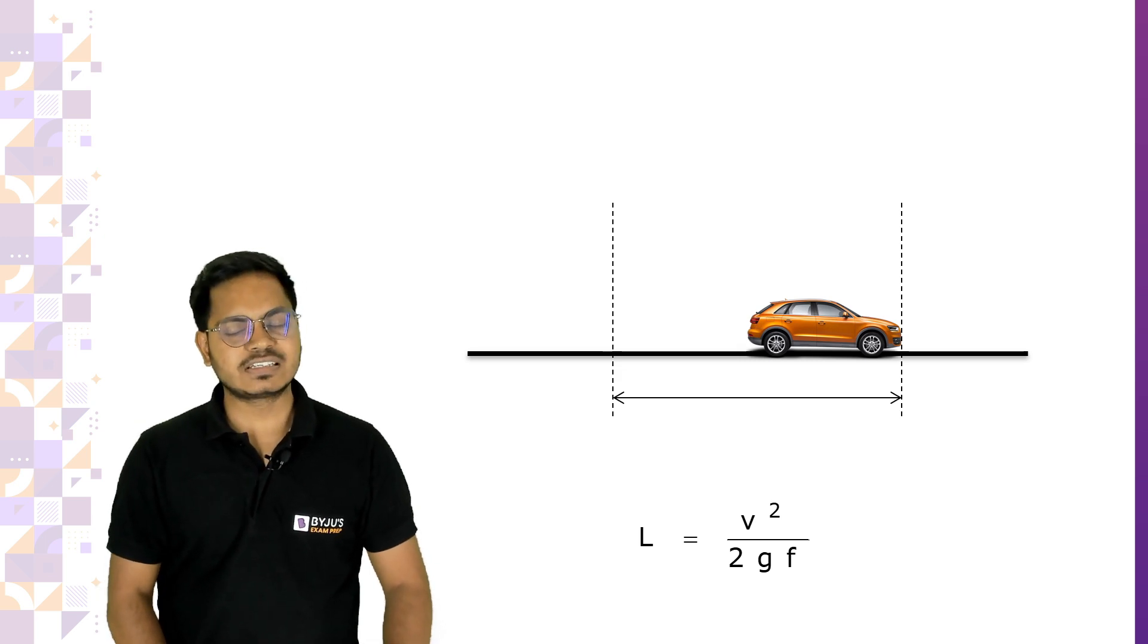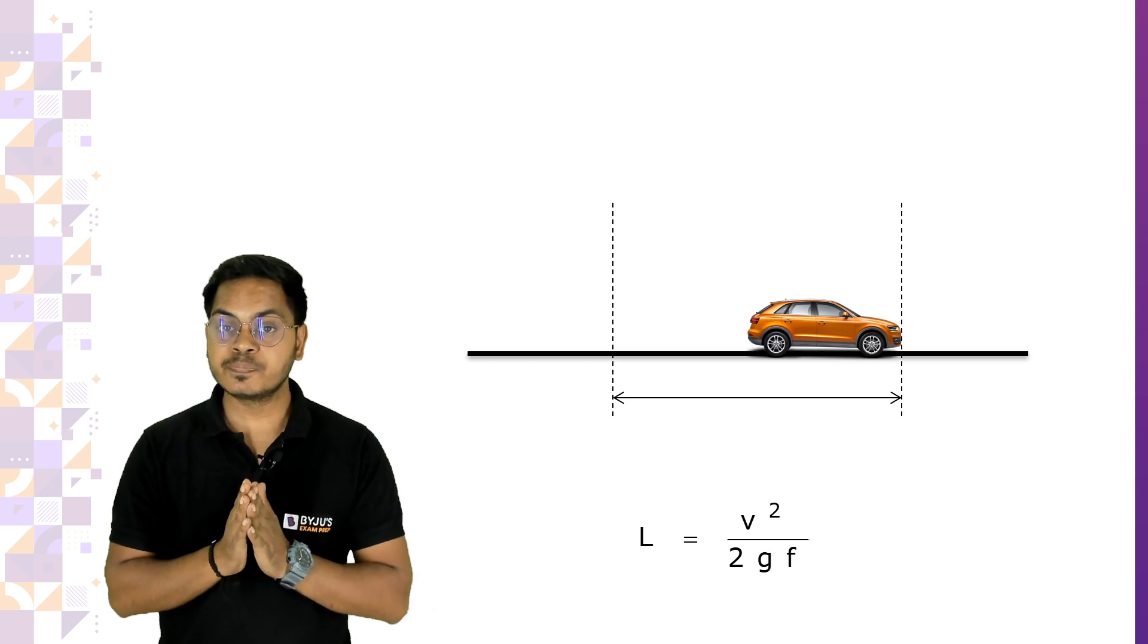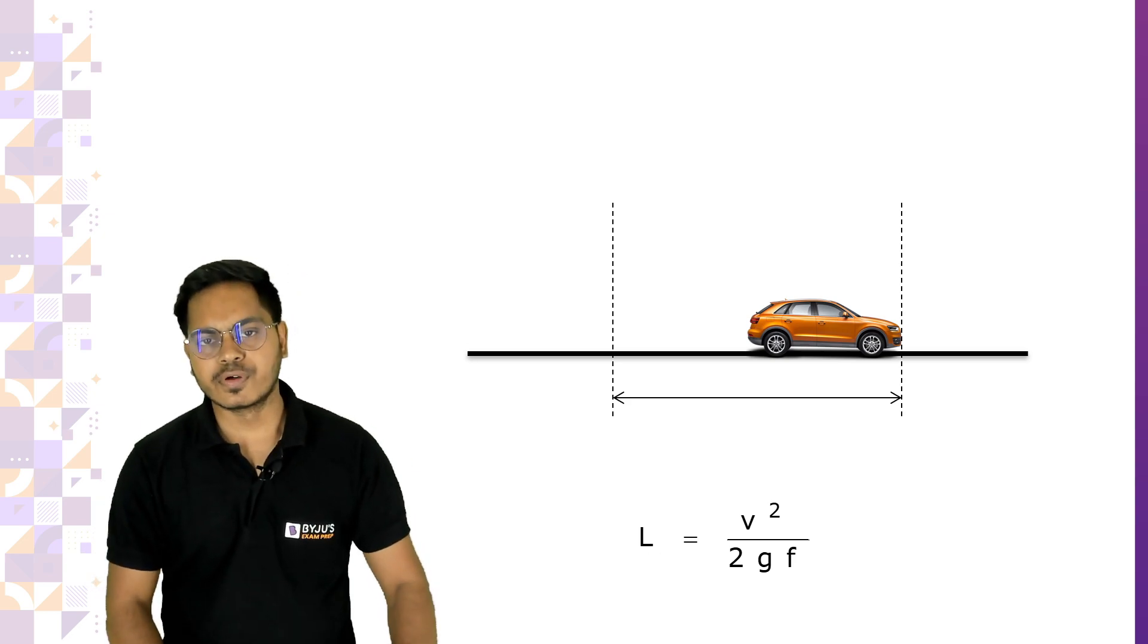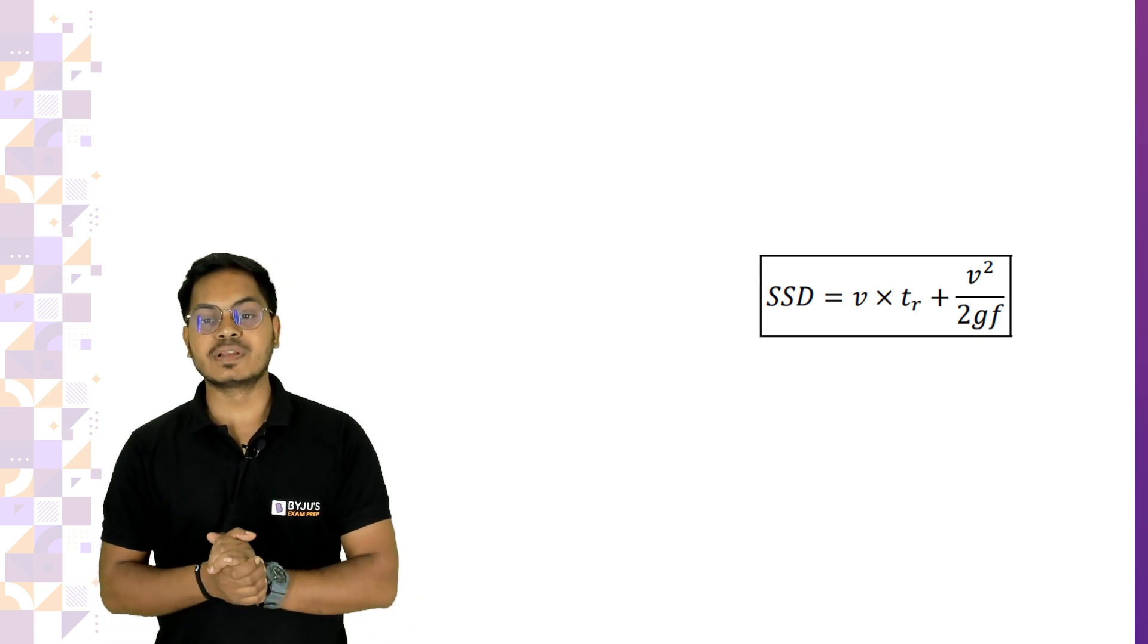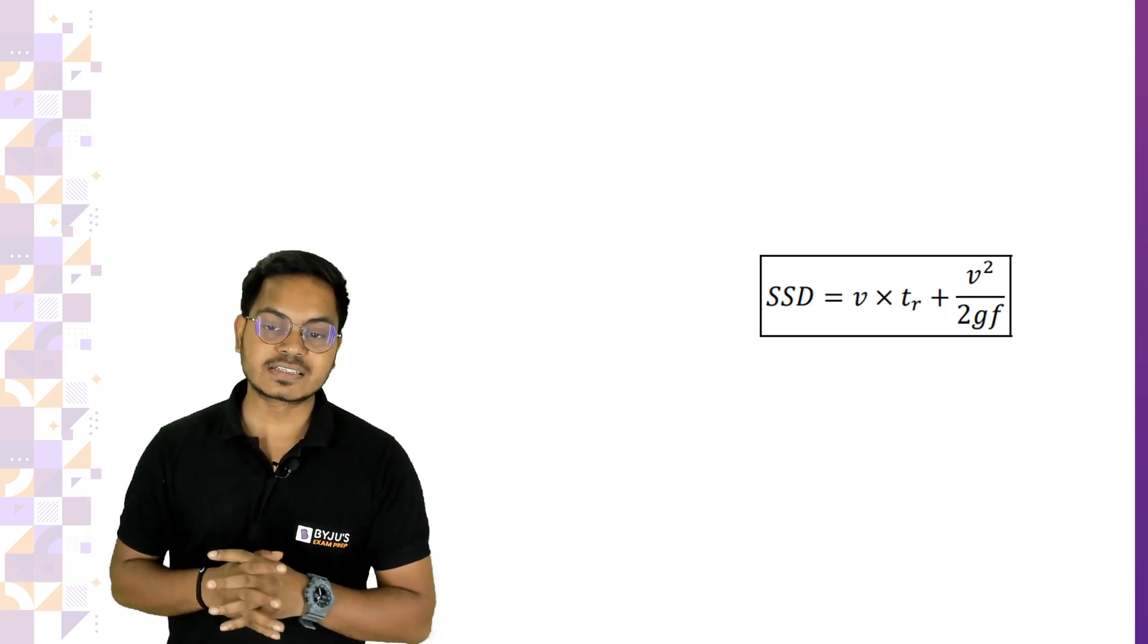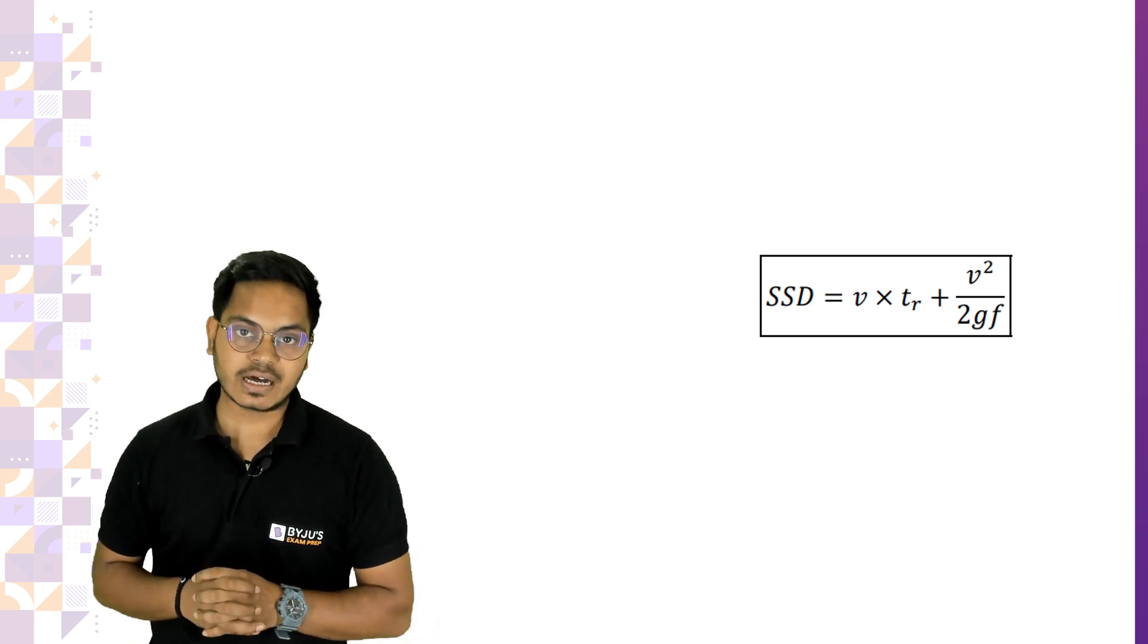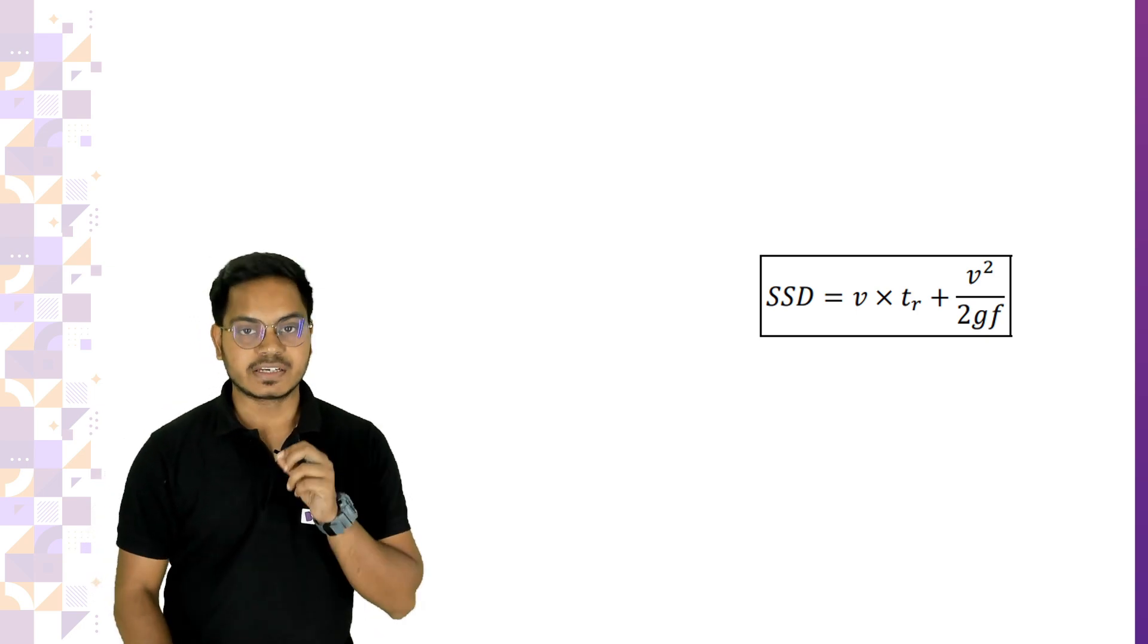Velocity is in meter per second. G is in meter per second squared. F is coefficient of longitudinal friction, whose values vary from 0.35 to 0.4 depending upon the speed of the vehicle. Finally, this is the formula of stopping sight distance that we get, which is the lag distance plus brake distance, where brake distance is V square by 2GF and lag distance is V into TR.